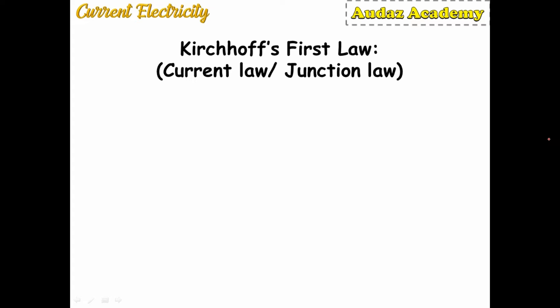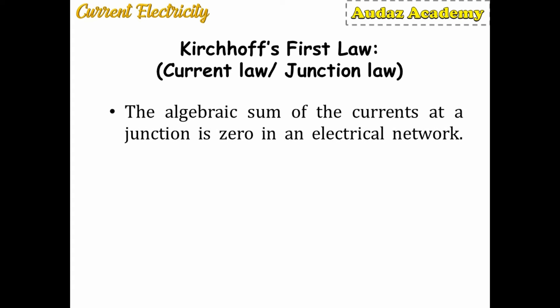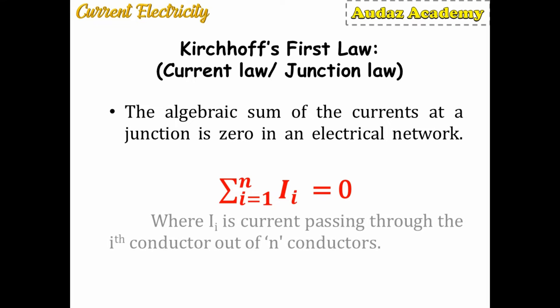Now, Kirchhoff's first law, also called the current law or junction law, states that the algebraic sum of currents at a junction is zero in an electric network. Mathematically it is written as summation of I_i from i=1 to n equals zero, where I_i is the current passing through the i-th conductor out of n conductors.